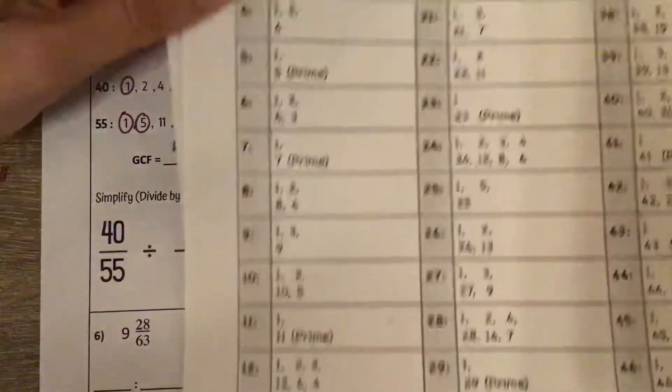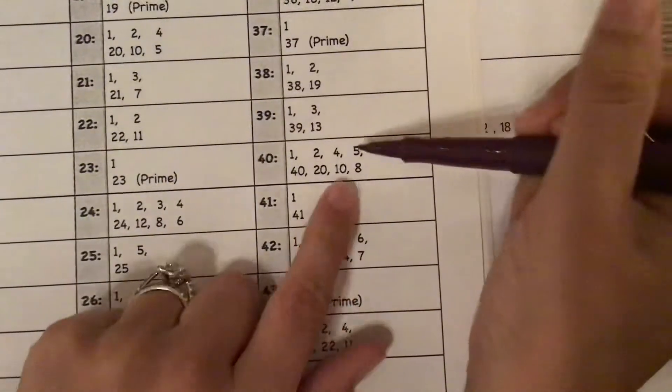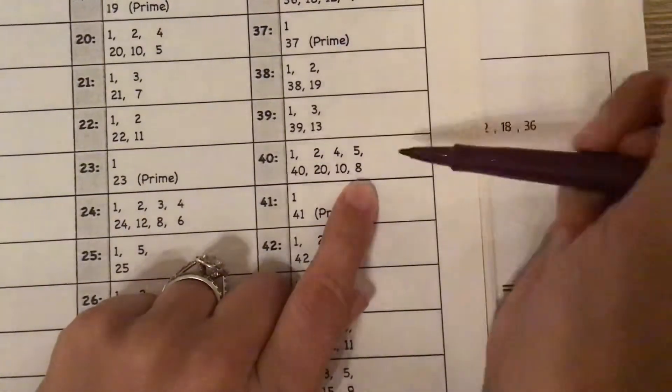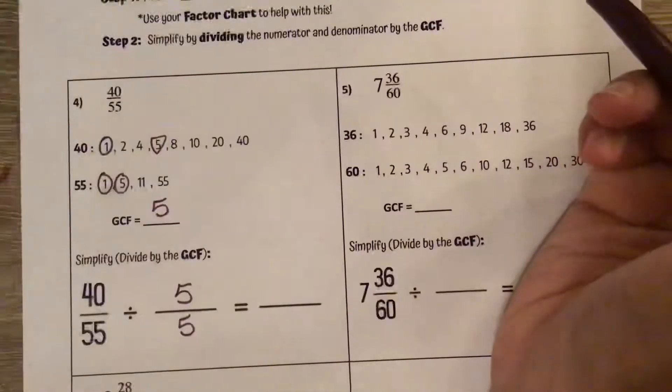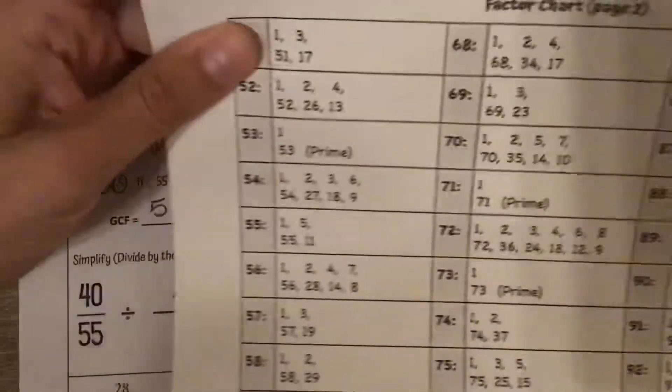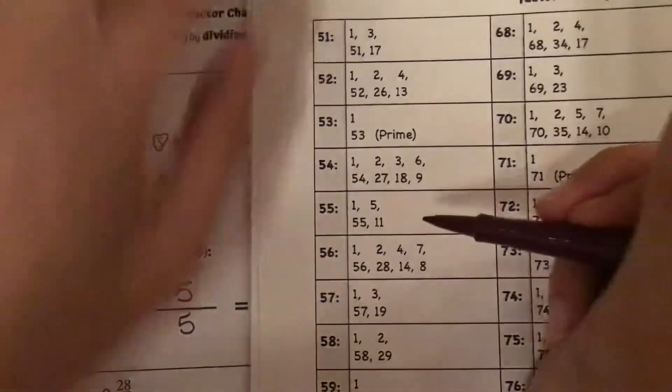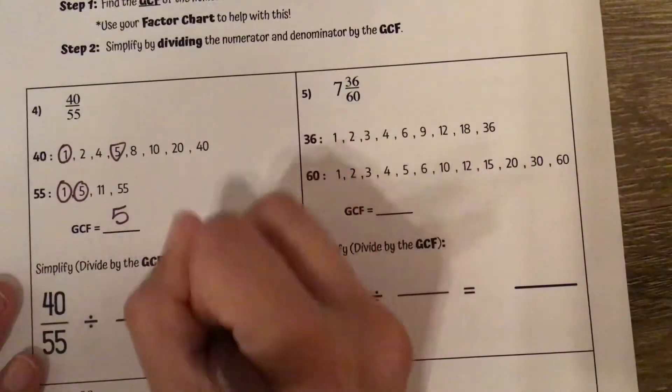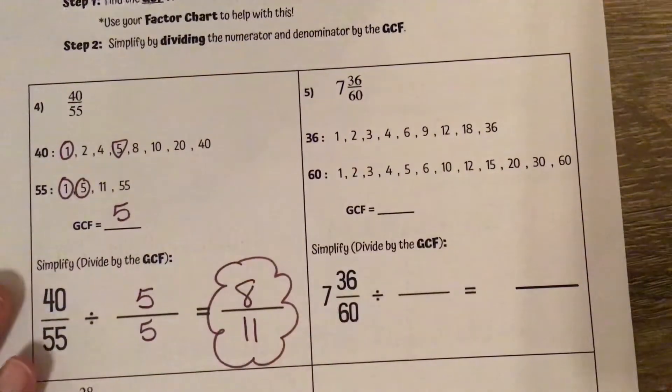If I don't know what 40 divided by 5 is, I can either use my multiplication chart or I can use my resource packet. On the packet, 5 is above 8. That means those are pairs that multiply to 40. So 40 divided by 5 is 8. For 55, same thing. 5 pairs up with 11, which means 55 divided by 5 is 11. So our simplified fraction is 8 elevenths.